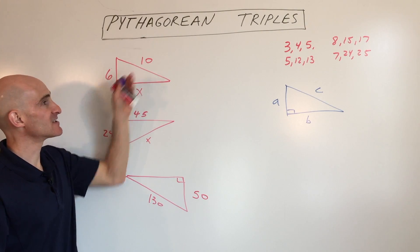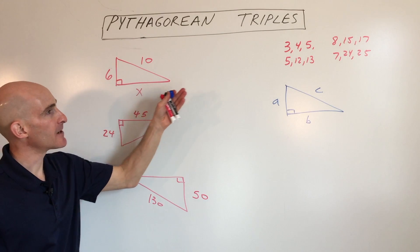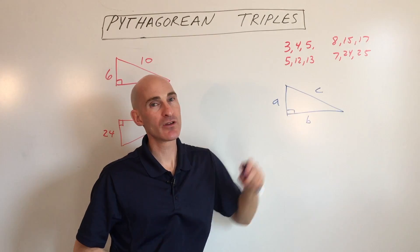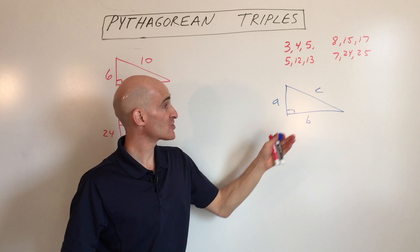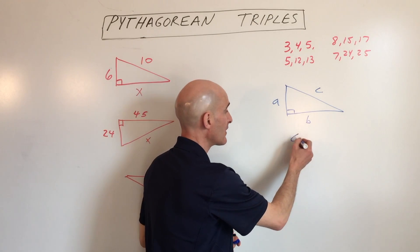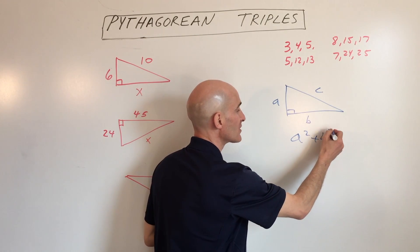If we have 6 and 10, at first glance we say that doesn't look like one of the Pythagorean triples, so we might just go right into doing our Pythagorean theorem. A squared plus b squared equals c squared - we'll still get the right answer, it just takes a little bit longer. This is just a shortcut.